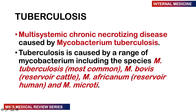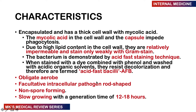With pasteurization of milk, the prevalence of Mycobacterium bovis has decreased. Those in rural settings often get this type of TB, and it commonly affects the GIT. You may also have Mycobacterium africanum and Mycobacterium microti. Mycobacterium itself is an encapsulated organism with a thick cell wall containing mycolic acid. These two things — the capsule and the mycolic acid — impede and prevent the process of phagocytosis.